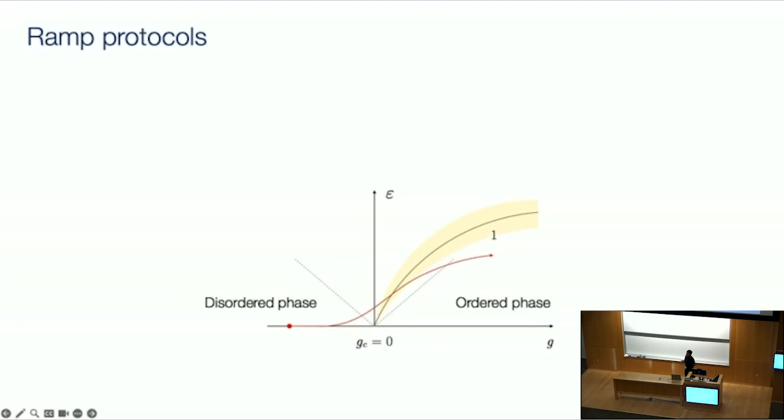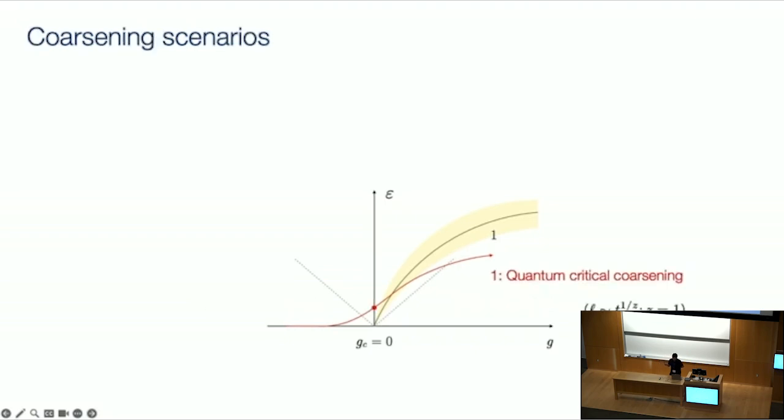So generically we are going to be interested in a ramp, where we start in some easy-to-prepare initial state. That is what you would do in nearly every quantum simulation experiment, analog experiment at least. It's also what you do for adiabatic quantum computing. And then we ramp the parameter, and this traces out the path in this energy density parameter space. All right, so initially the system is evolving adiabatically. But when the system is within this quantum critical regime, it undergoes a small amount of what we call quantum critical coarsening.